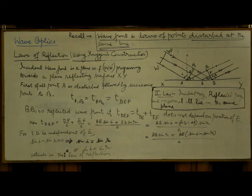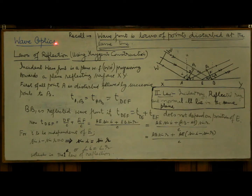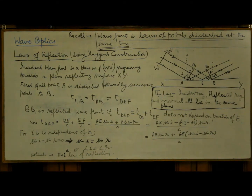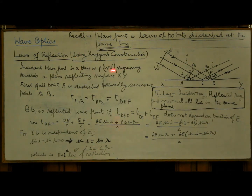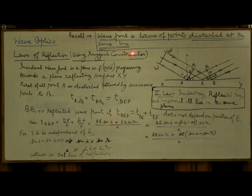In the last video, introduction to wave optics, we studied the postulates of Huygens' theory, which describes how a wave propagates and how we can get a secondary wavefront from the primary wavefront. Huygens' theory can be used to explain the phenomenon of reflection. In this video we will be deriving the laws of reflection using Huygens' construction. For this purpose, recall that the wavefront is the locus of points which are disturbed at the same time and are in the same phase.